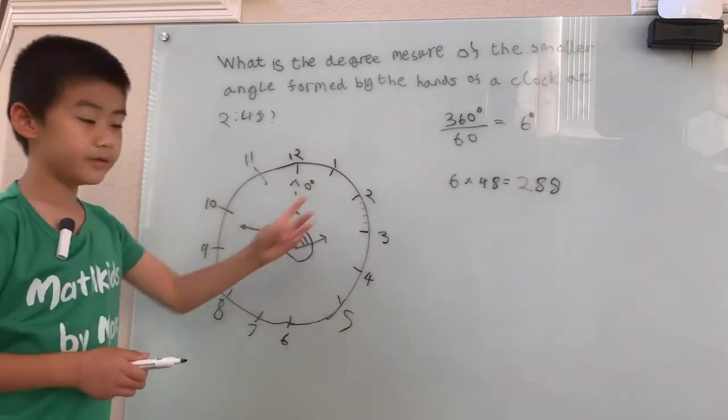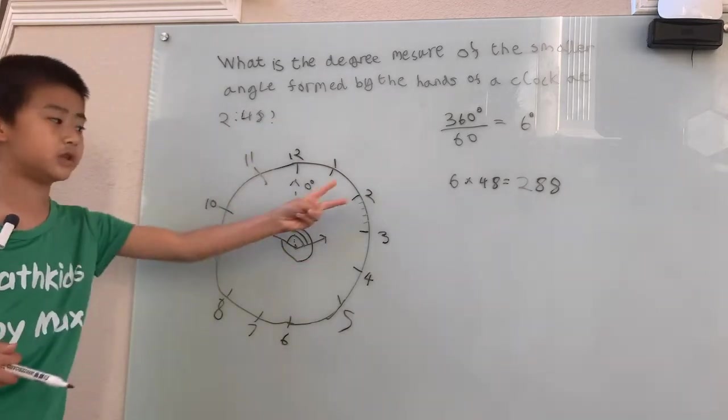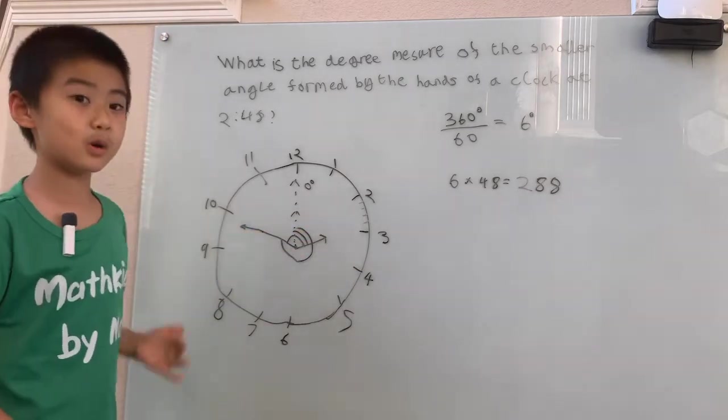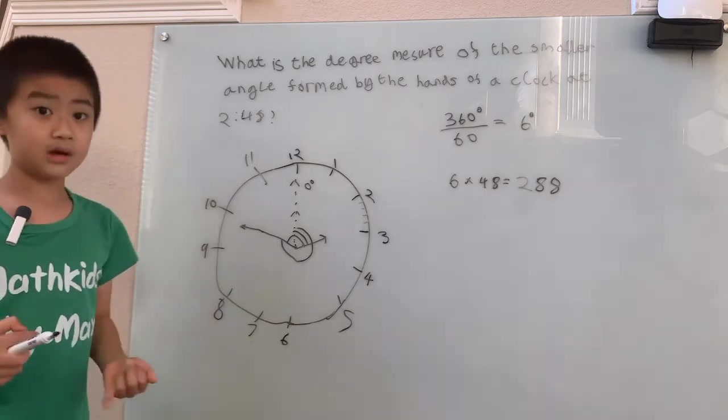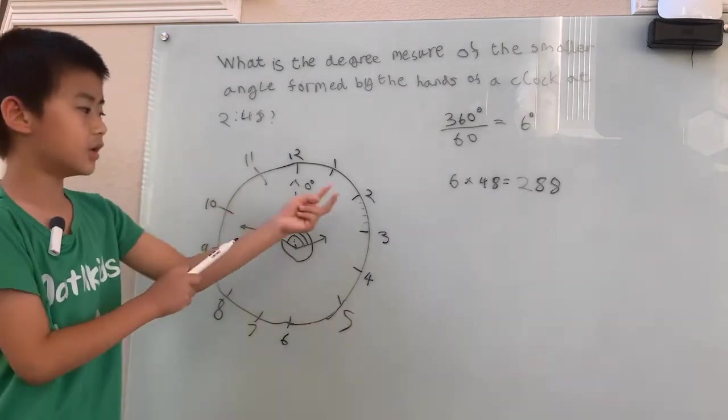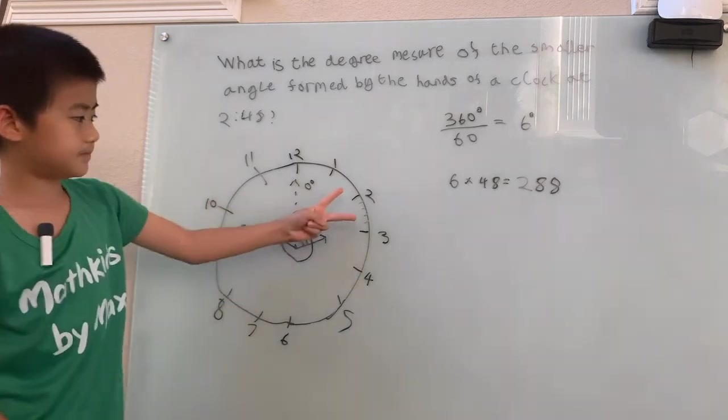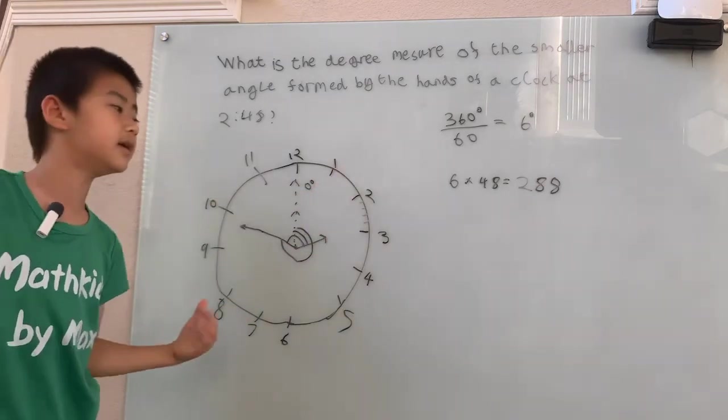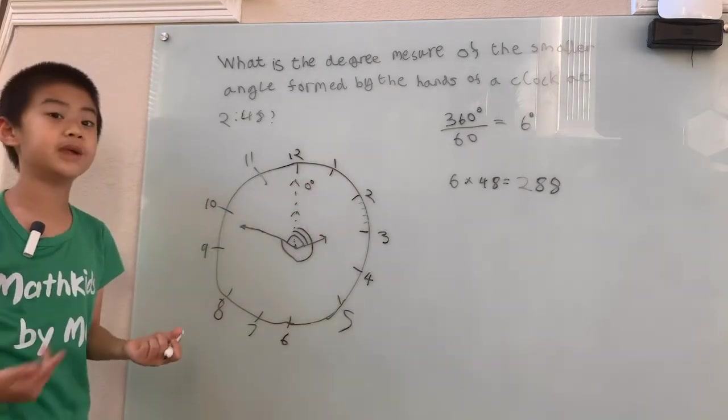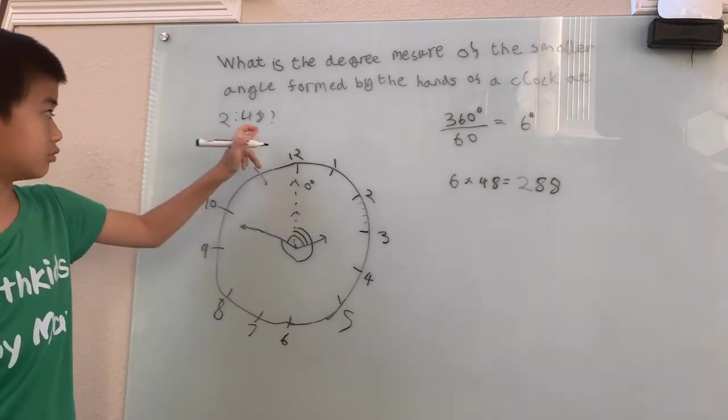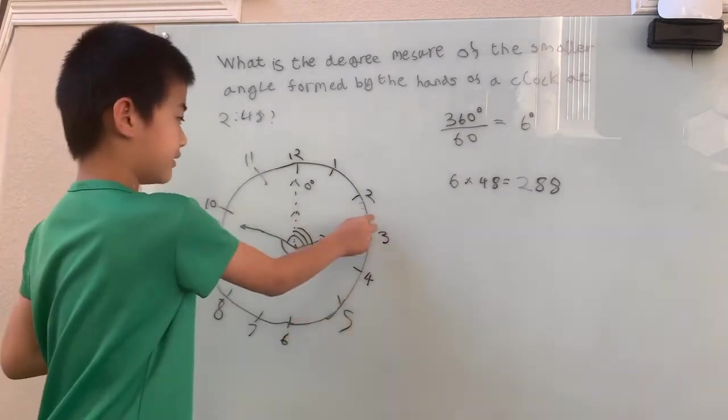We're going to draw in the four tick marks between the 2 and 3. Since 2:48, that's between 2 o'clock and 3 o'clock, the hour hand is pointing somewhere between the 2 and 3. Since an hour is 60 minutes and there's 5 tick marks between 2 and 3, every time the hour hand moves one tick mark, it's 12 minutes. That means 48, that's four of these lengths of 12 minutes, that means it has to be pointing at the fourth space.